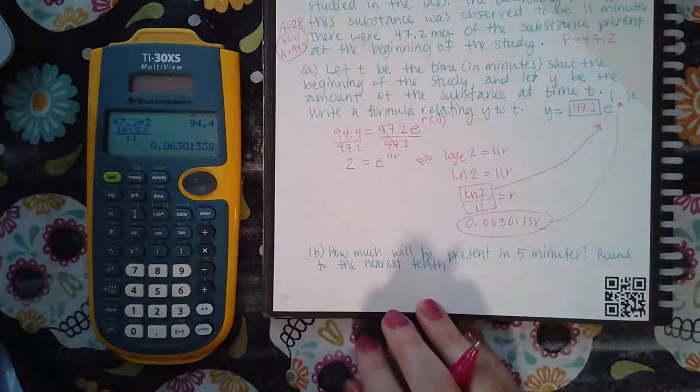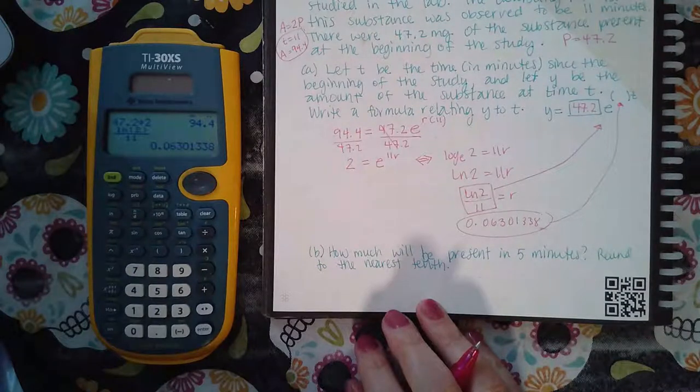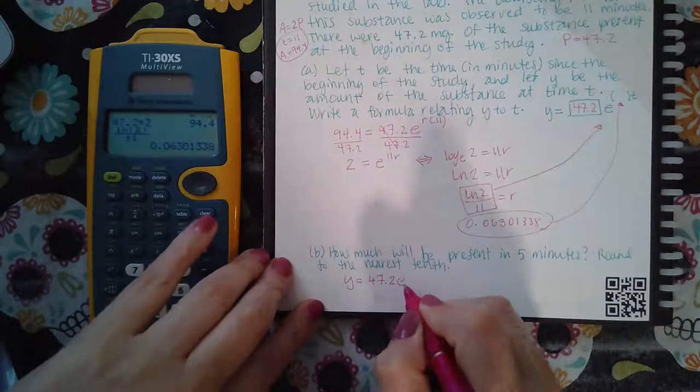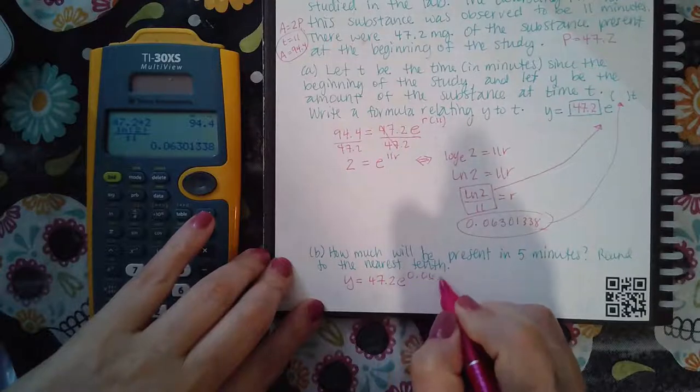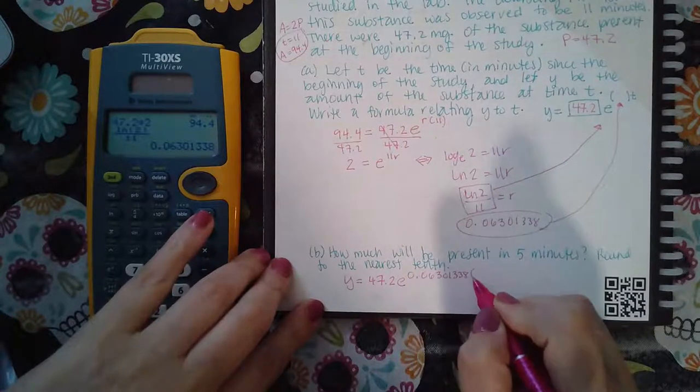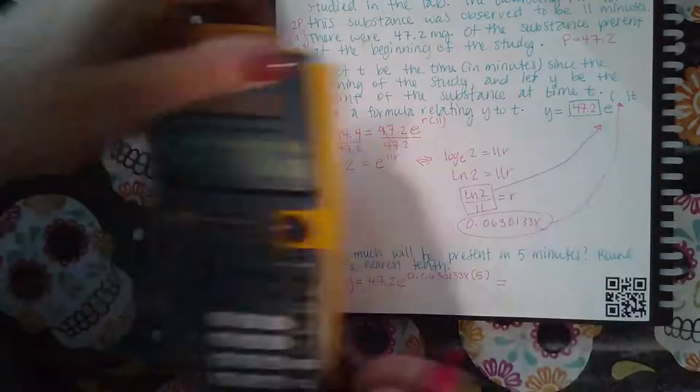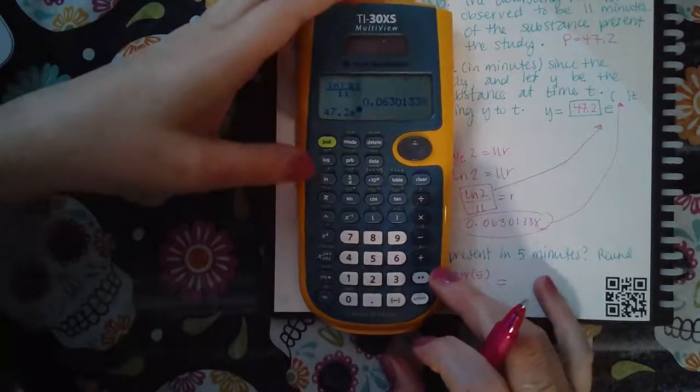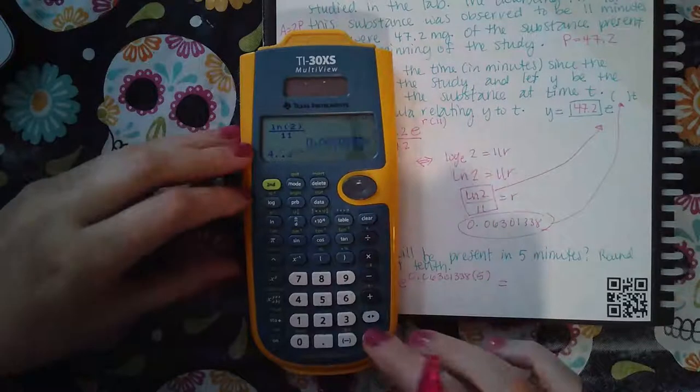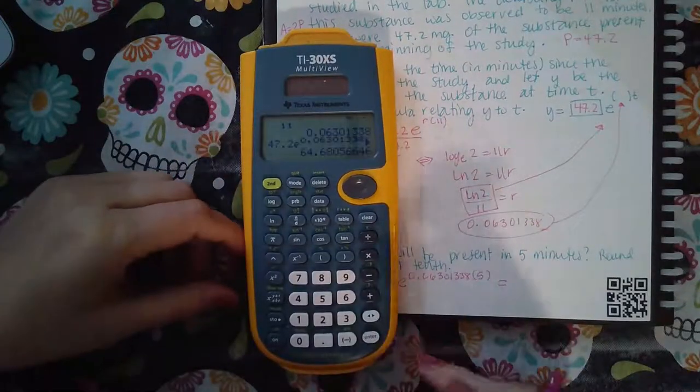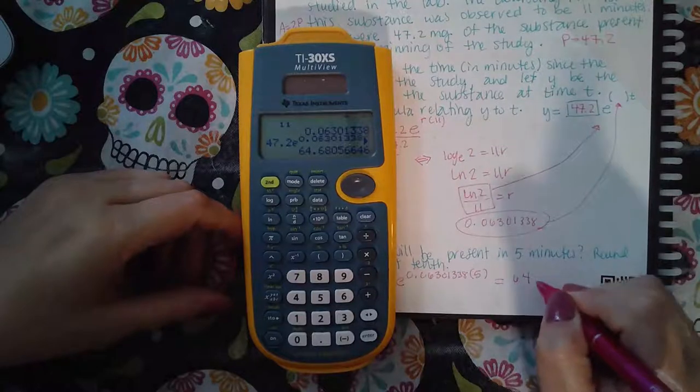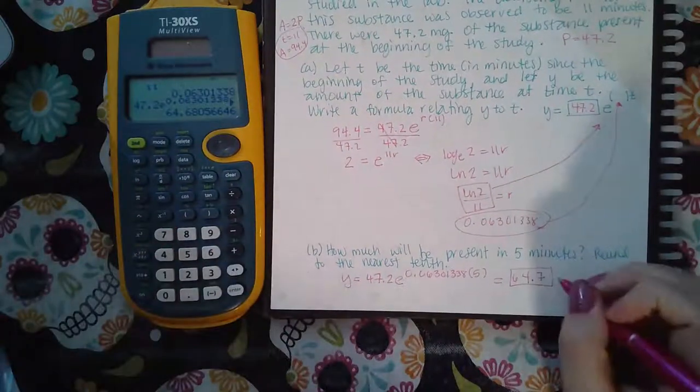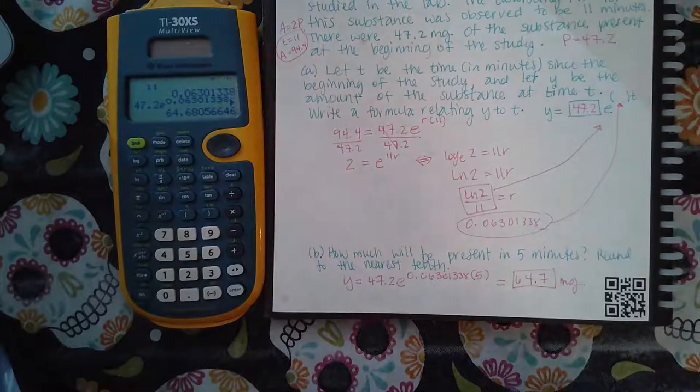Then it says how much will be present in 5 minutes, round to the nearest tenth. So I'm going to take that formula, and I'm going to use the decimal. And the time would be 5 minutes. So I'm going to take 47.2e raised to the decimal times 5, and I get 64.7. Round to the nearest tenth, so 64.7 milligrams will be present.